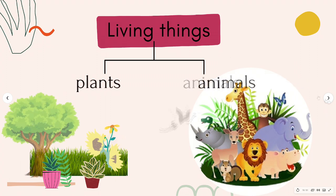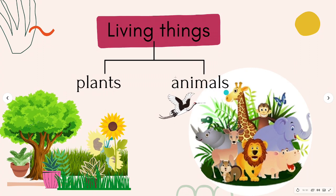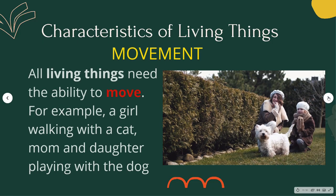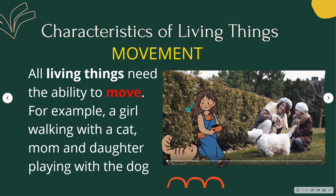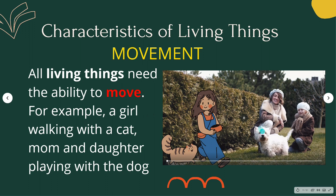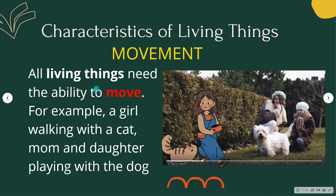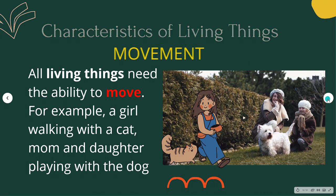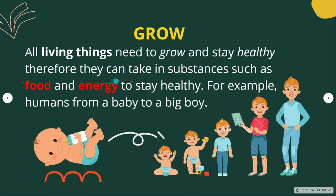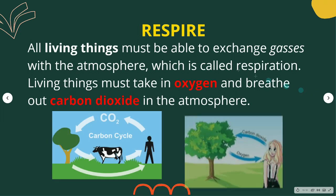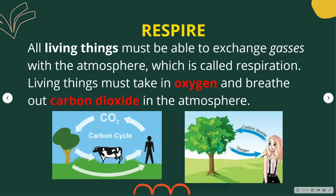In this lesson, we will talk about living things, particularly plants and animals. But what are the characteristics of living things? All living things need the ability to move. For example, you can see a girl walking with a cat, and a mom and her daughter playing with their dog — they are moving, walking, playing, talking. These are actions of movement. All living things need to grow and stay healthy; they can take in substances such as food and energy. For example, humans grow from a baby to a big boy. All living things must be able to exchange gases with the atmosphere, which is called respiration, or when you breathe.